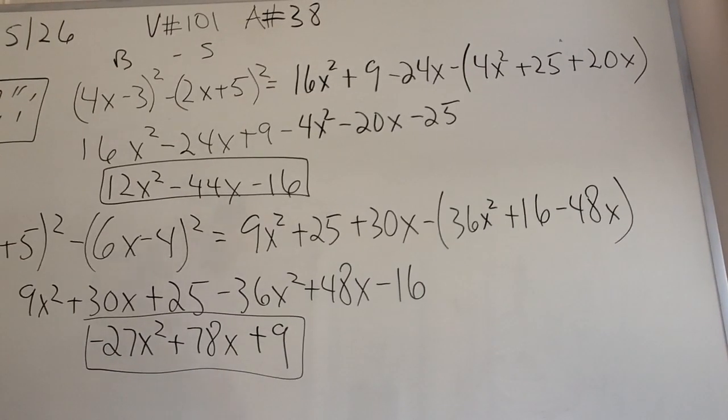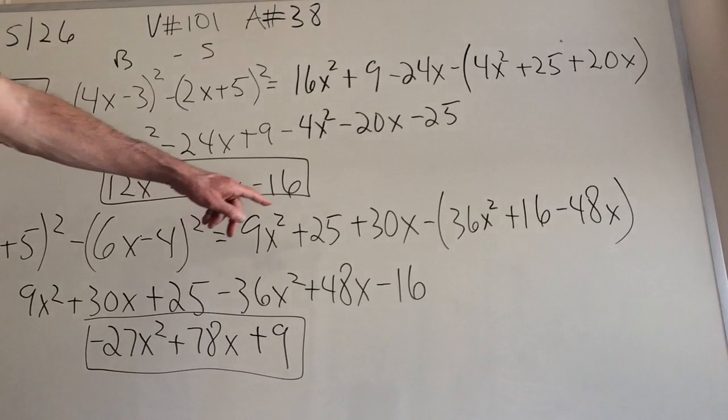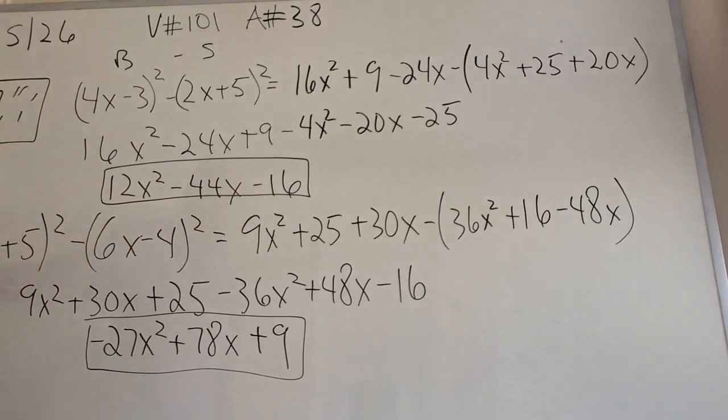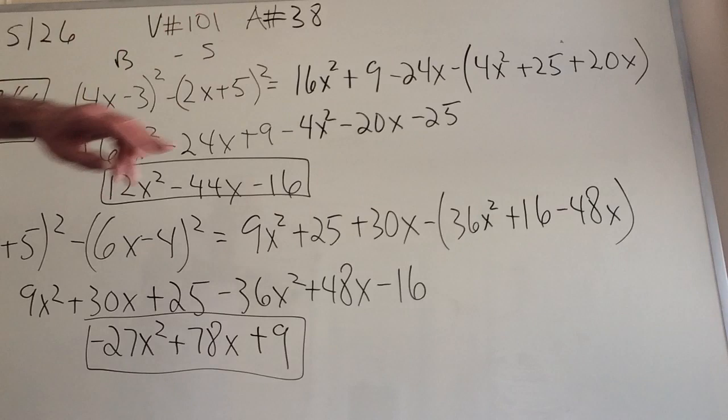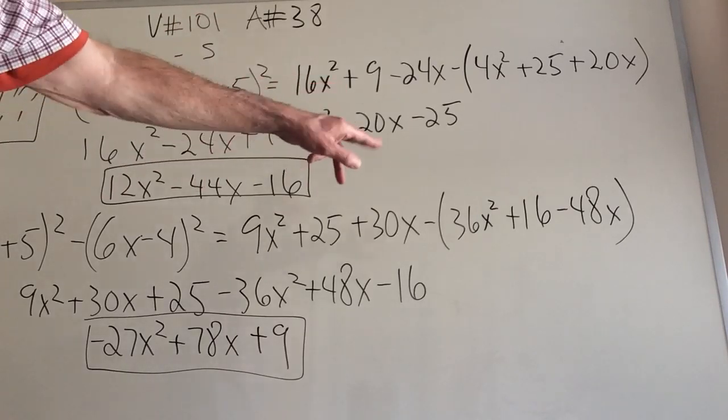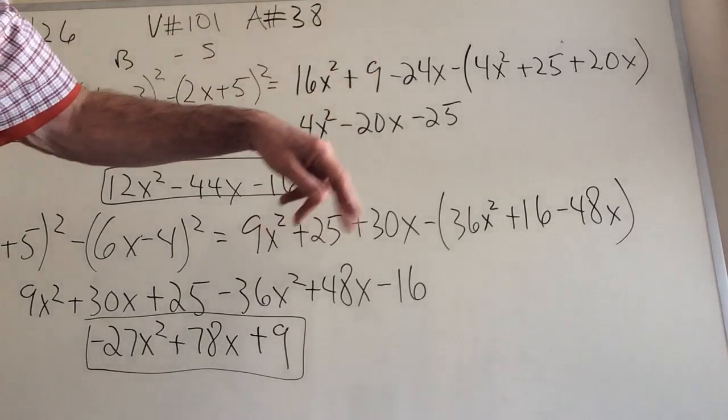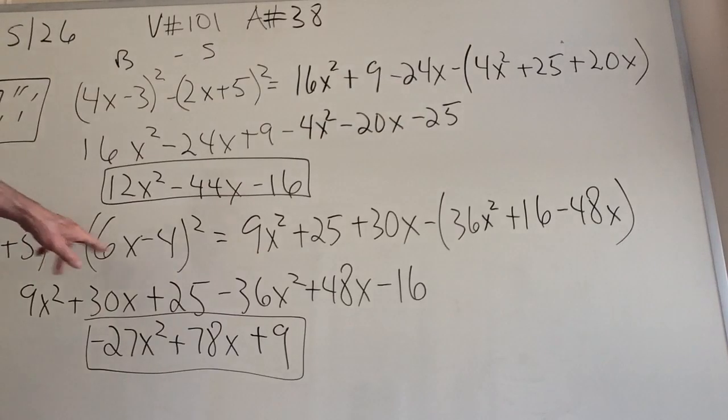And again, I'm doing the same thing. There's 9x squared, there's 25. You can follow me left to right. 3 times 5 times 2 is 30x. There's the 6x squared, there's the 4 squared. And here we go, 6 times 4 times 2. Negative on the second one, positive on the first one.